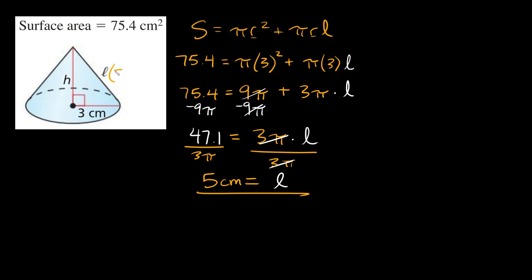Let's plug in 5 for l, the hypotenuse. Now that we know l equals 5, we have two sides of the right triangle — the hypotenuse and one shorter side (the radius, 3). To solve for the last missing side, the height, we can use the Pythagorean theorem: a squared plus b squared equals c squared, where a and b are the shorter sides and c is the hypotenuse.